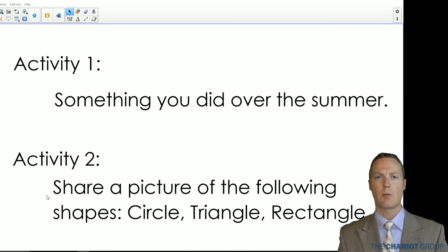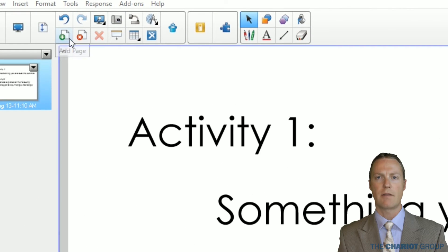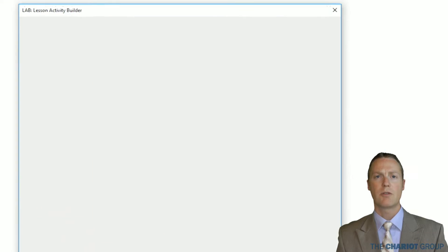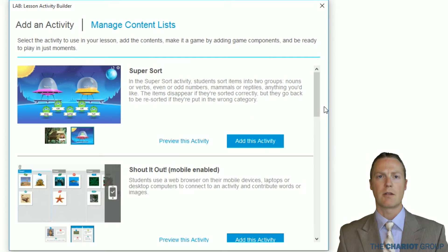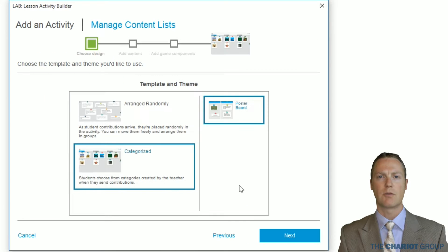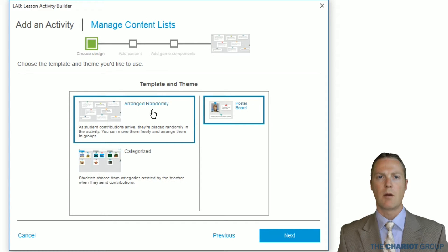Now that we have our plan, we will add a new page and we will begin creating the activity by clicking on the Lesson Activity Builder on the toolbar. That is a button that looks like a magic hat. Then we will scroll down until we find Shout It Out and then click Add This Activity. Here we will choose either to have the students' messages arranged randomly or categorized. For the first activity, we are going to do randomly. Then we will choose our theme, Poster Board. Then click Next.